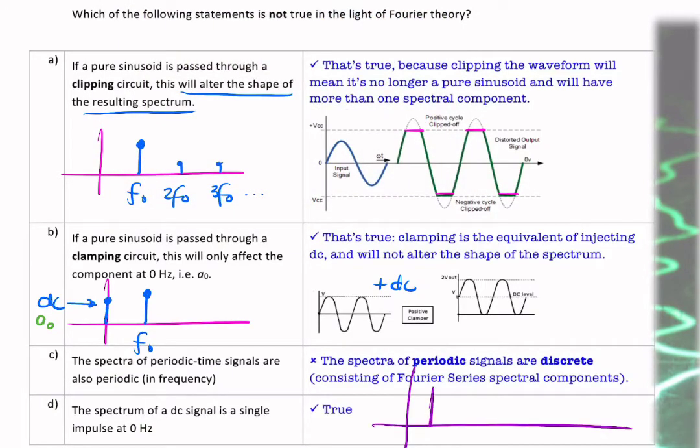Well, we know the spectrum is going to look something like that. And that isn't periodic. We describe that as being discrete. So we can say that the spectrum of periodic time signals are discrete in frequency. That would have been correct.